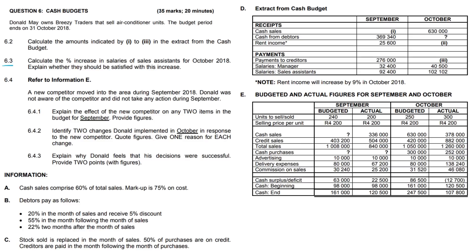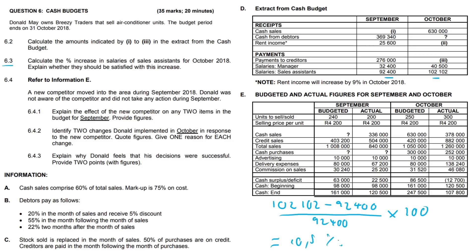Question 6.3: calculate the percentage increase in salaries of sales assistants for October 2018. It's big minus small over small, like selling price minus cost price over cost price times 100. So: 102,102 minus 92,400, divided by 92,400, times 100 — giving us 10.5%.